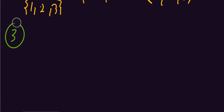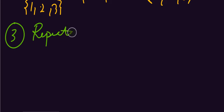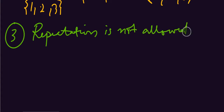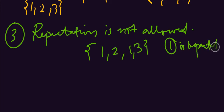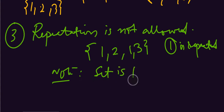The third point is: repetition is not allowed. Just like if I say — is it a set with 1 repeated — you say no, because 1 is repeated. If 1 is repeated, then it is not a set. Note that a set is a function.